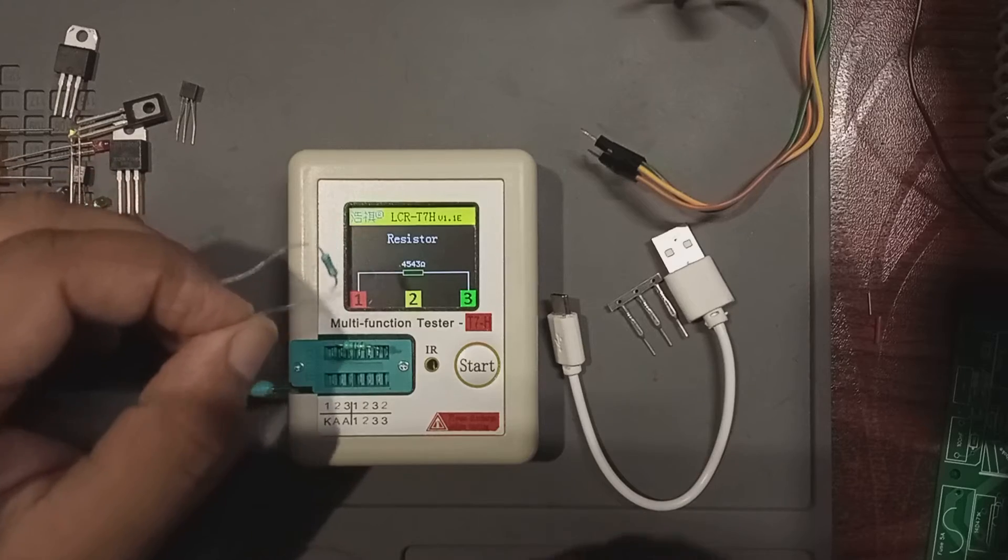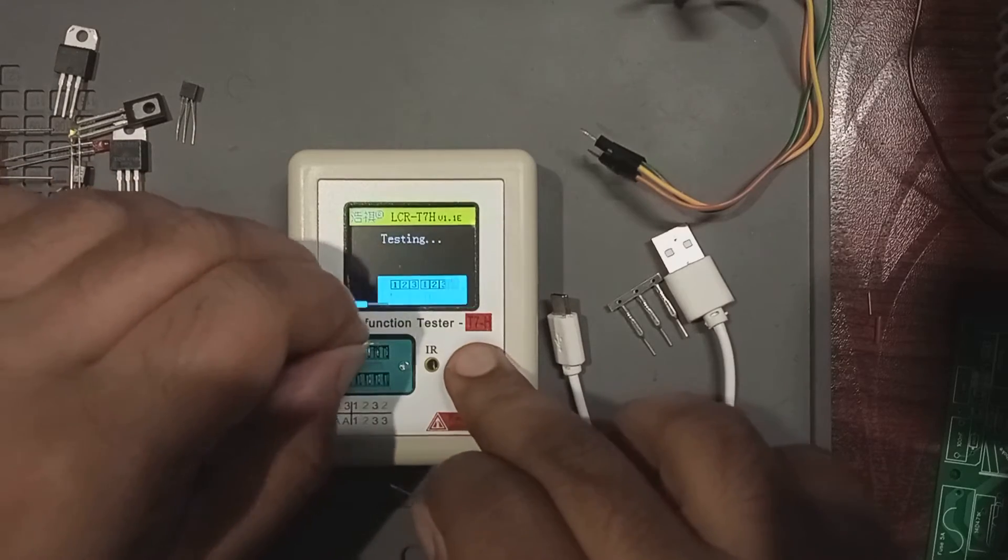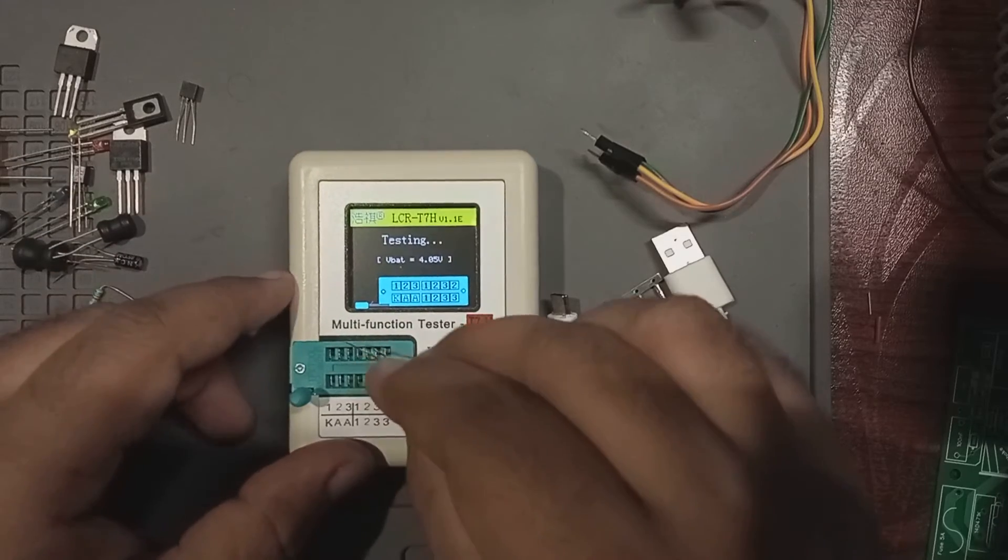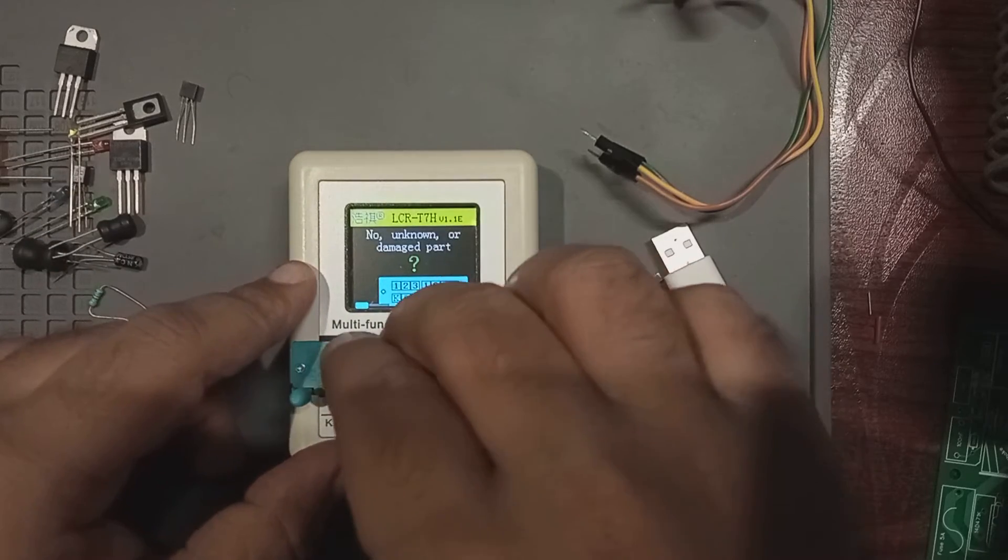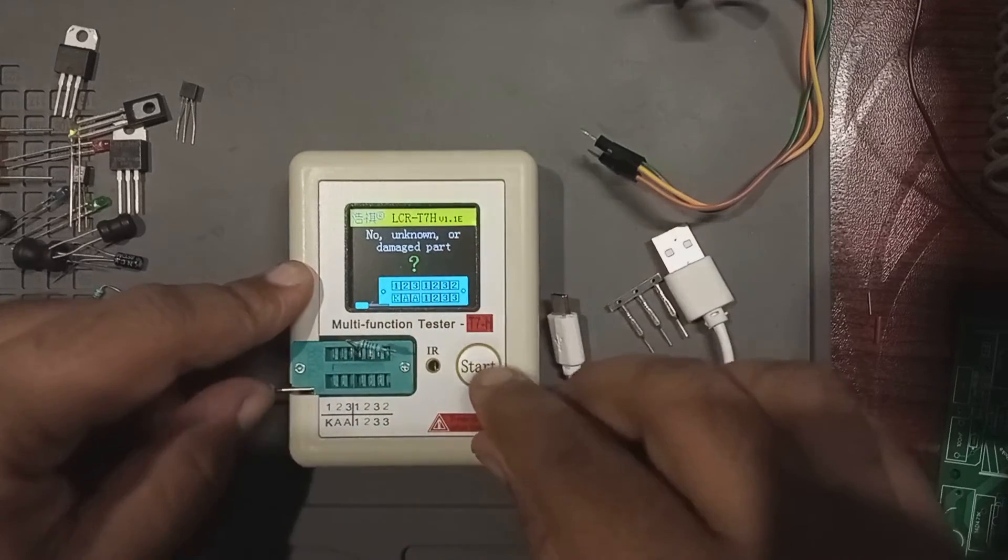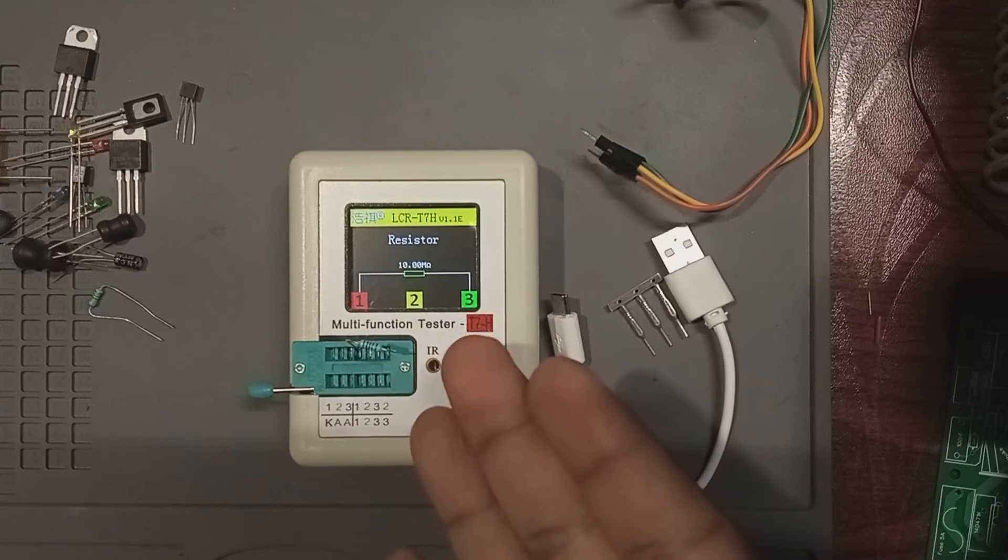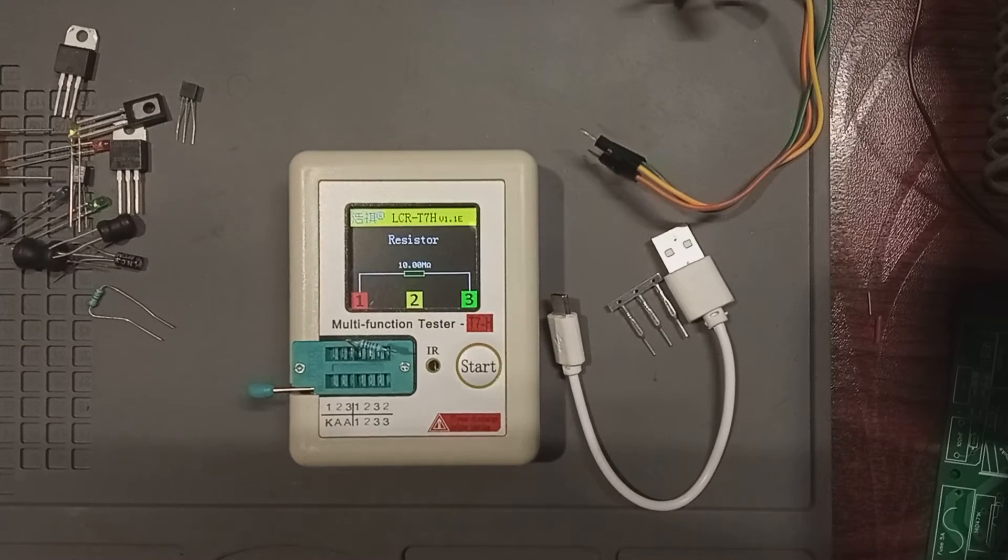Now here I have a very high value 10 mega ohms resistor with 1% tolerance. And if I insert it and run the test, it is detected as 10 mega ohms bang on, which is fantastic isn't it?